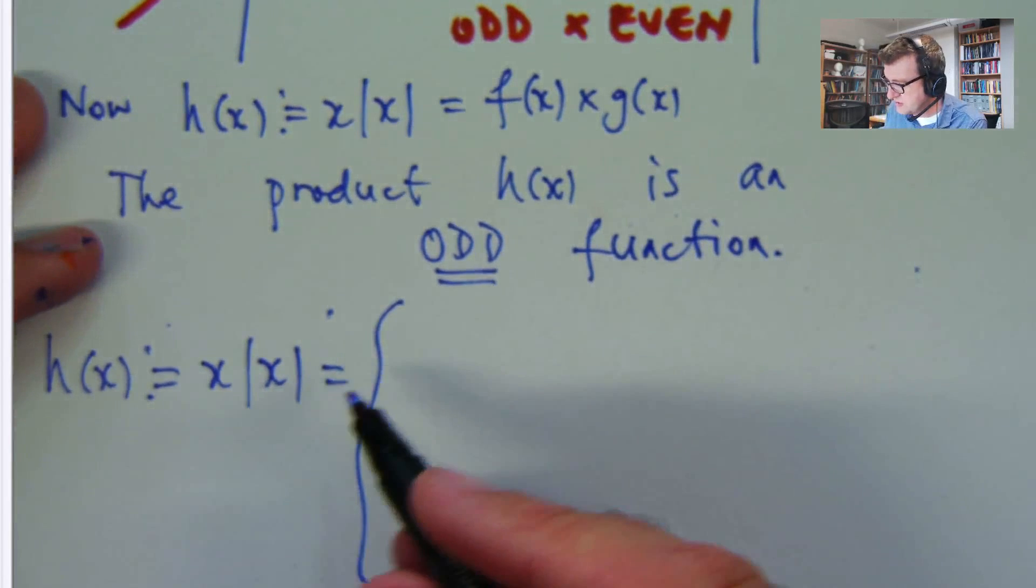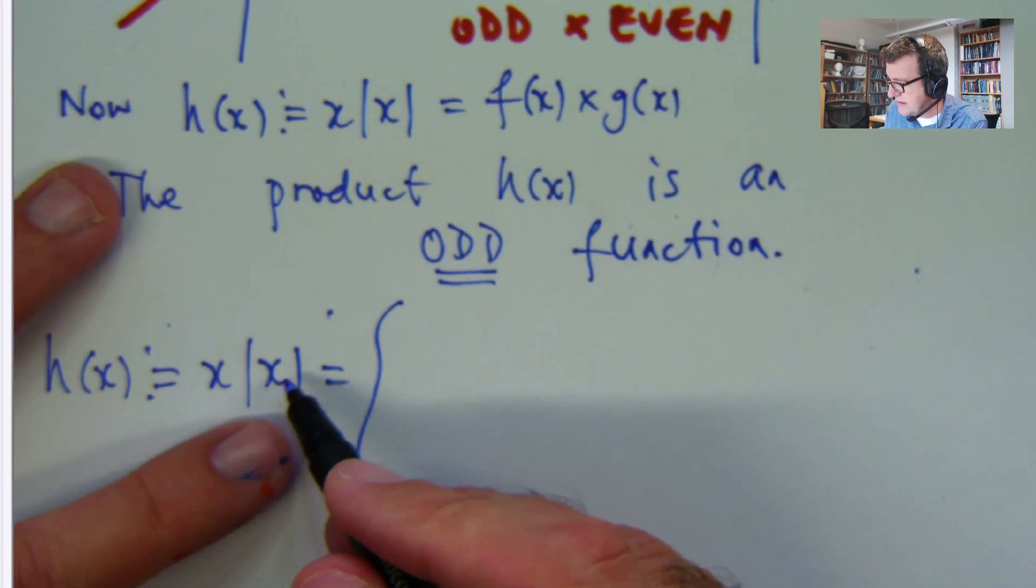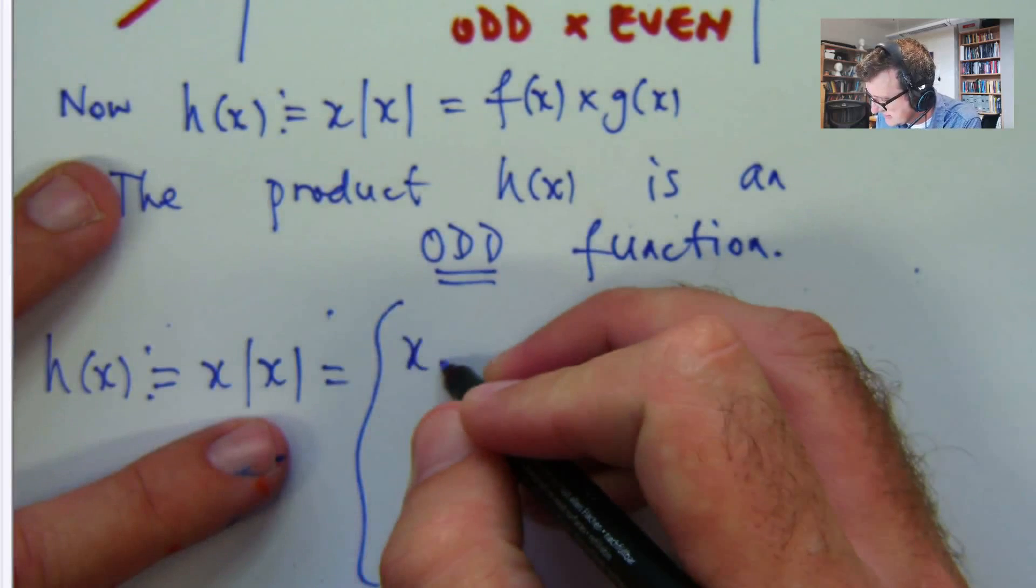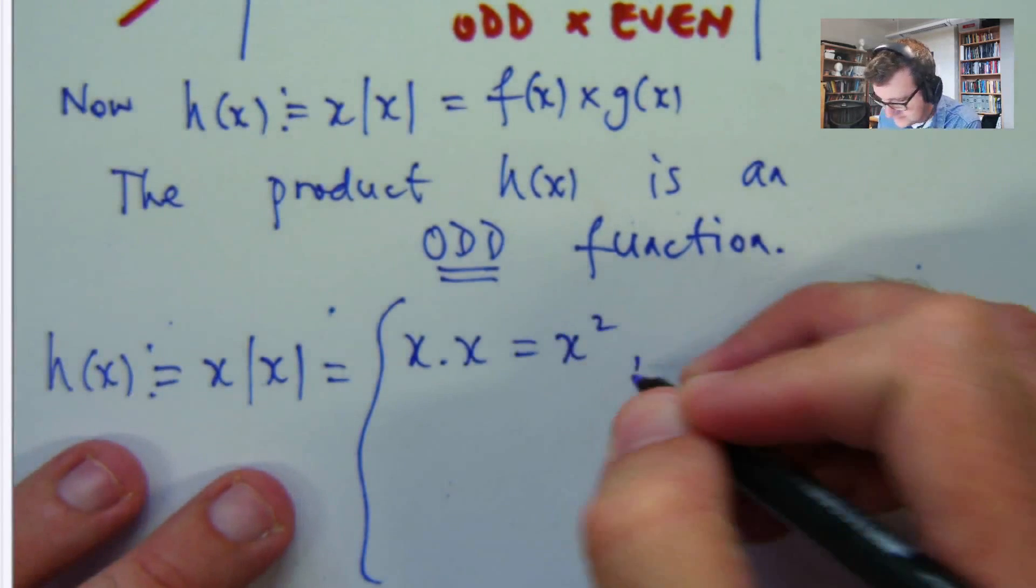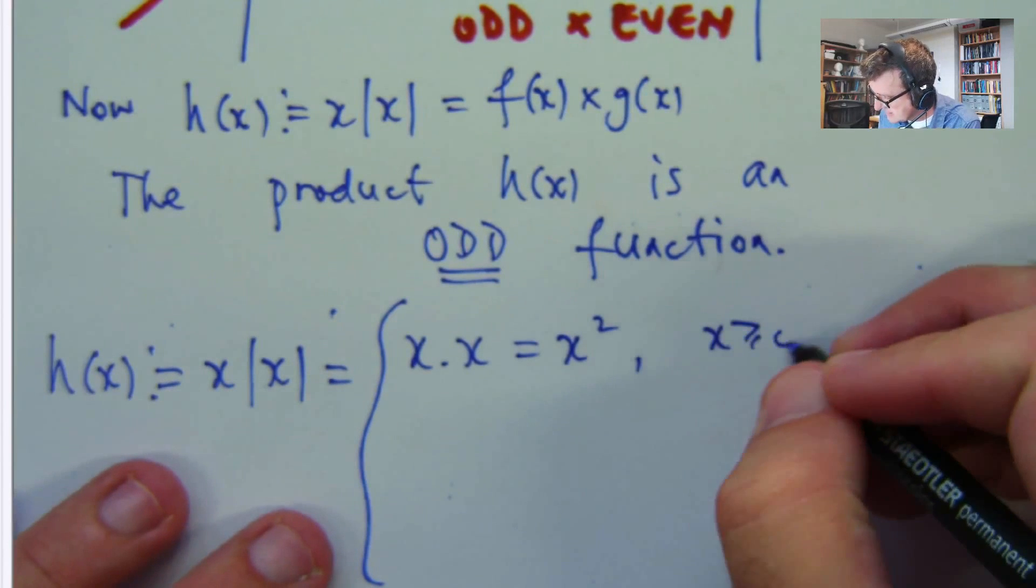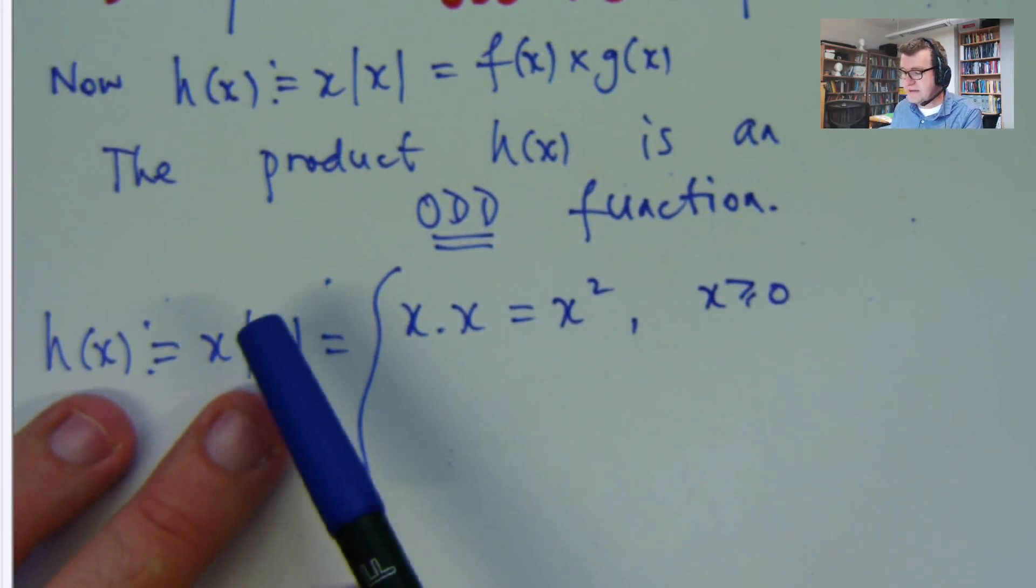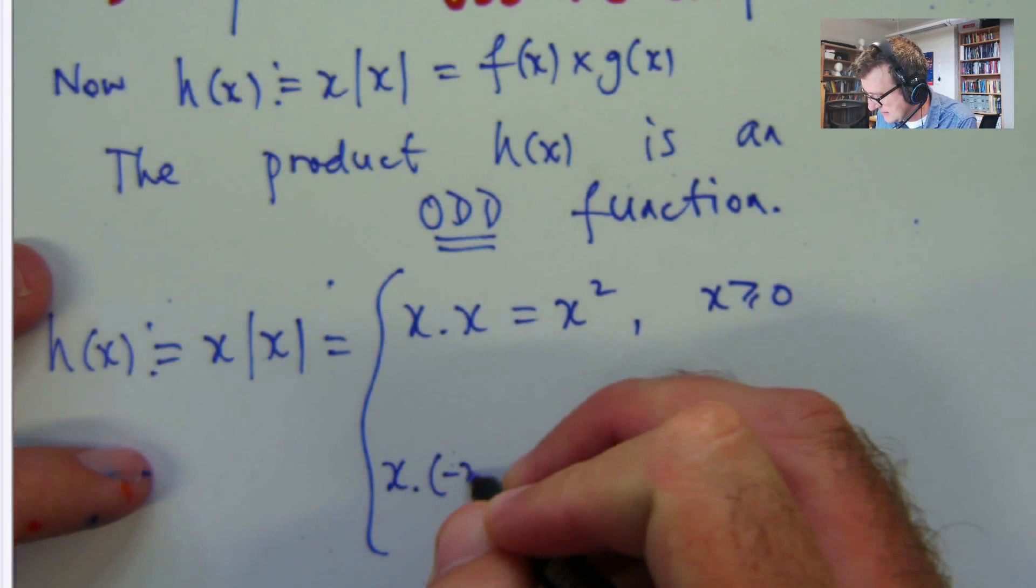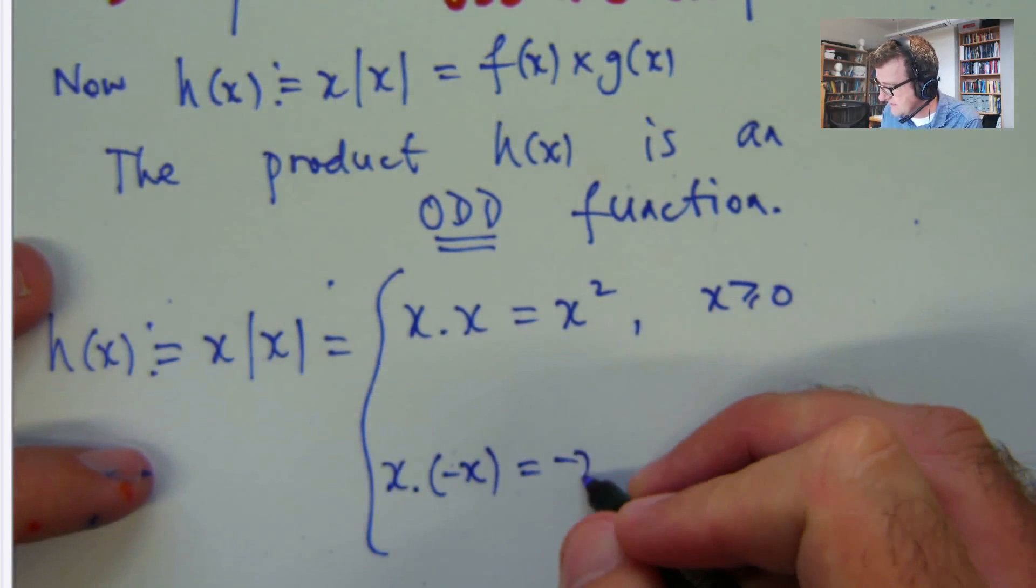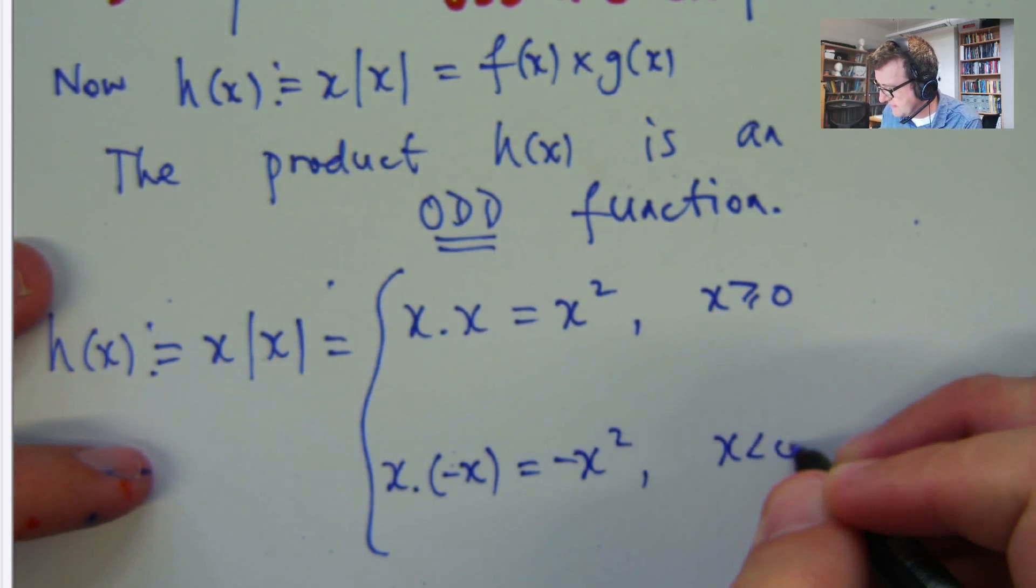So for x positive, or greater than or equal to zero, absolute x is just x. And for x negative, absolute x is negative x. So this is negative x squared.